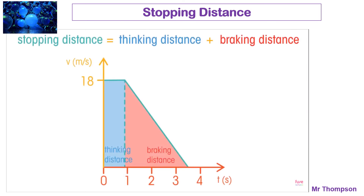The overall stopping distance is the two added together: thinking distance plus braking distance. This graph — a screenshot from Fuse School — shows that when traveling at a steady speed of 80 meters per second, you travel a certain distance (the area under the graph) while you are reacting. In this case, the reaction time is quite long, about 0.8 to 0.9 seconds. While braking and slowing down, the area in the peachy color represents the braking distance.